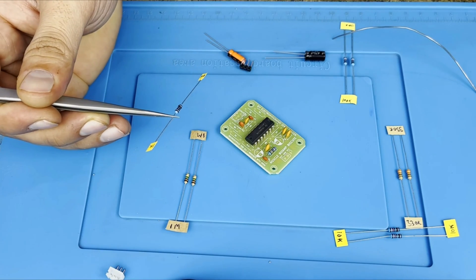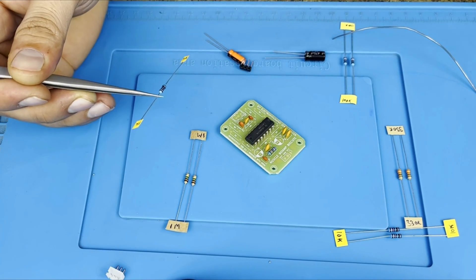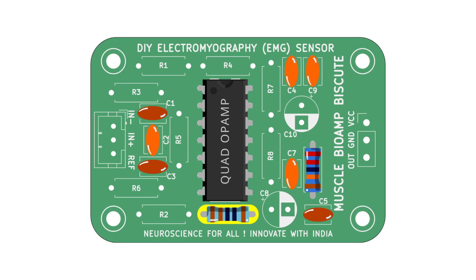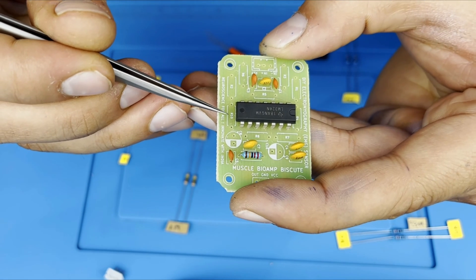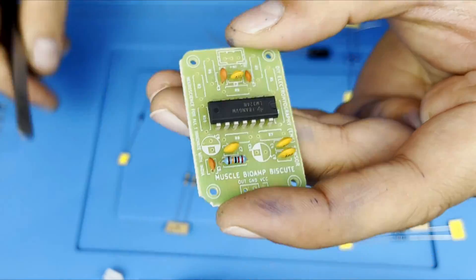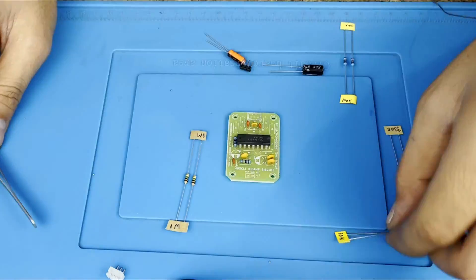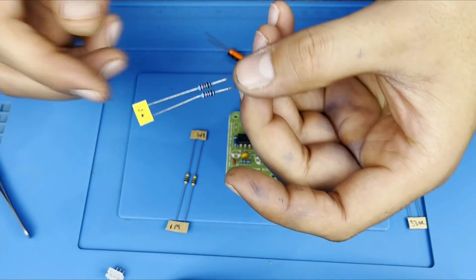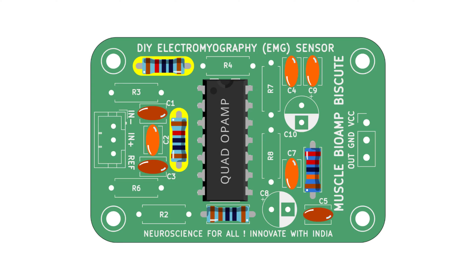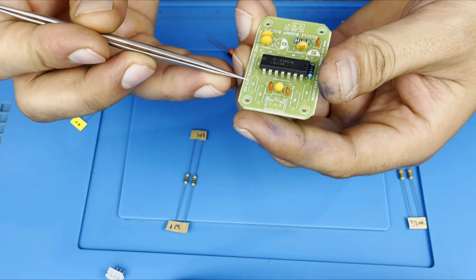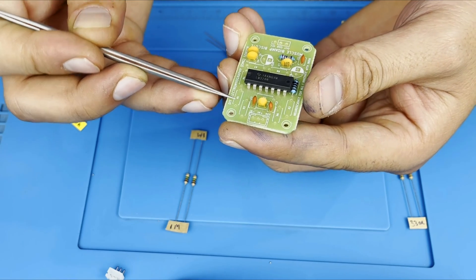This is our 1K resistor, it is located at R10 below the IC over here. This is our 10K resistor R1 and R5. Now this diagram you can see over here R1, R5.